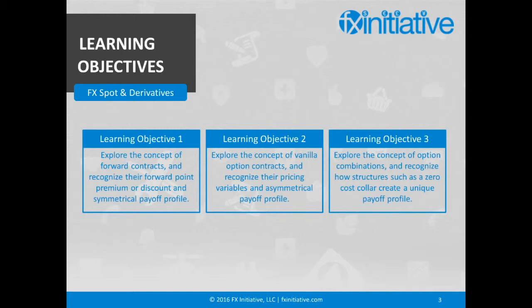The components of a collar will be reviewed to uncover that the structure is comprised of a combination of a purchased option and a sold option, whereby the premium paid on the purchased option is offset by the premium received from the sold option to create a zero-cash outlay.